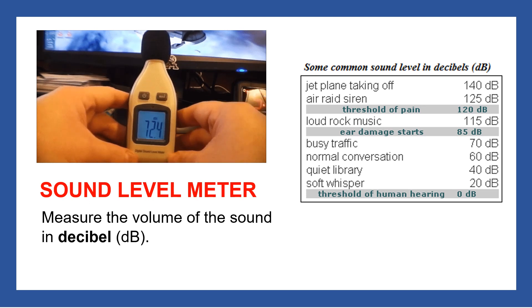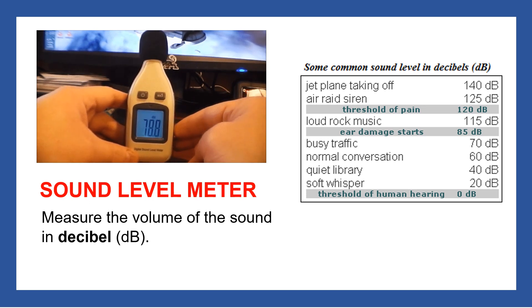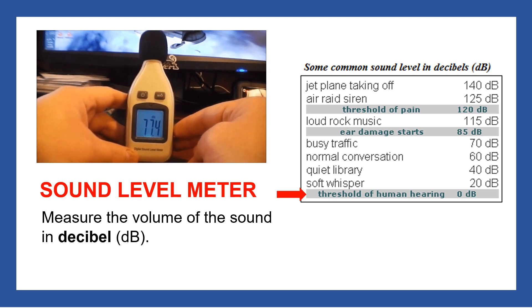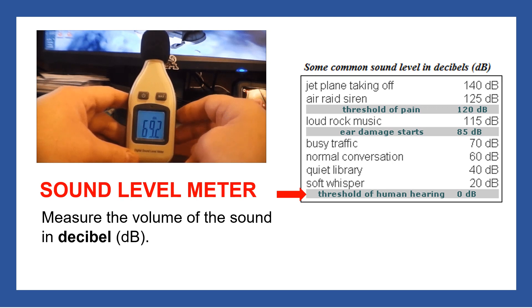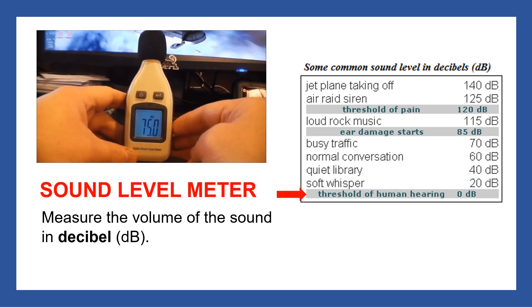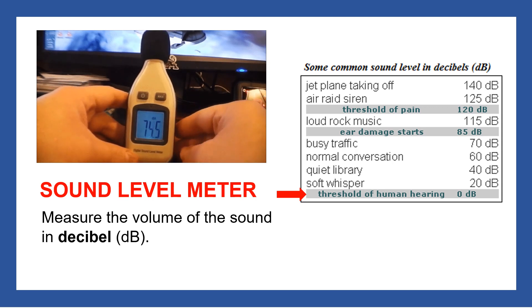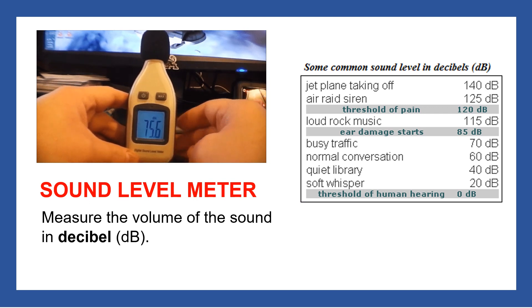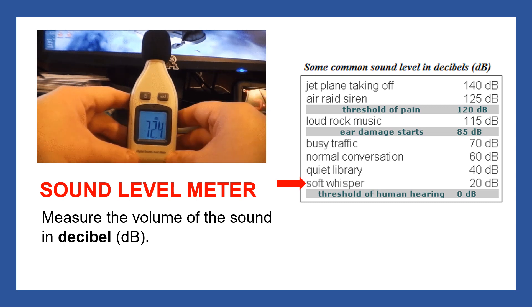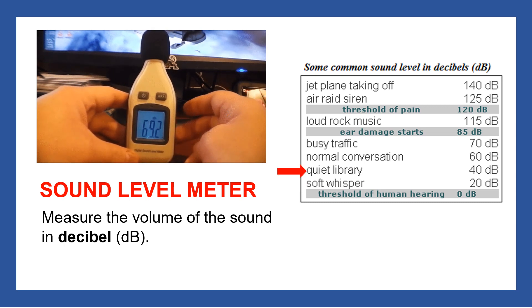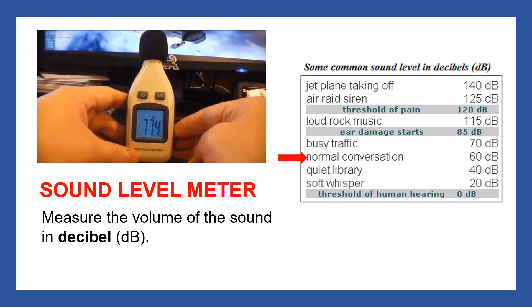Here are some common sound levels in decibels. The threshold of human hearing is around zero decibels — this is the start, and you have to exceed zero decibels for us to hear the sound. When we say threshold, it means the start of something. A soft whisper is around 20 decibels, and in a quiet library we have around 40 decibels.